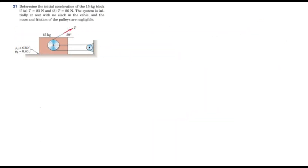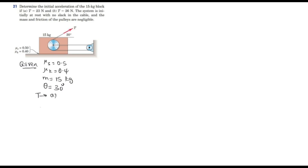Let's take out the given parameters. The static friction coefficient is 0.5, and the kinetic friction coefficient is 0.4. The mass of the object is 15 kg, the angle theta is 30 degrees, and tension is given in two cases: for case A, T equals 23 newton, and for case B, T equals 26 newton.